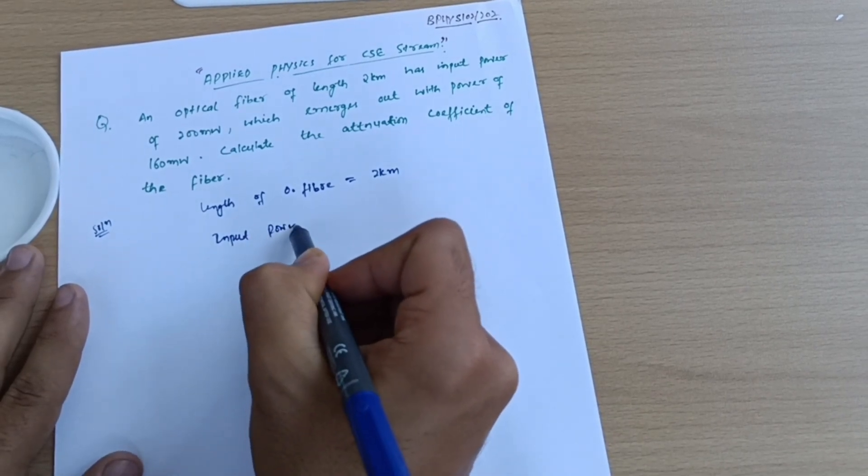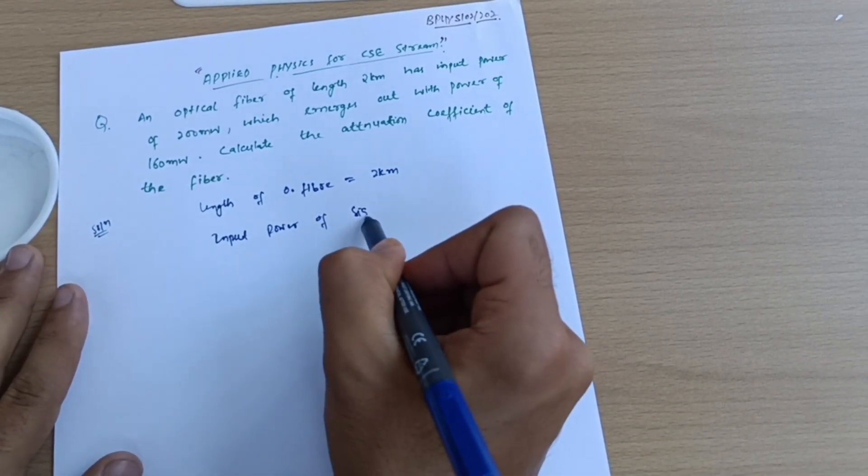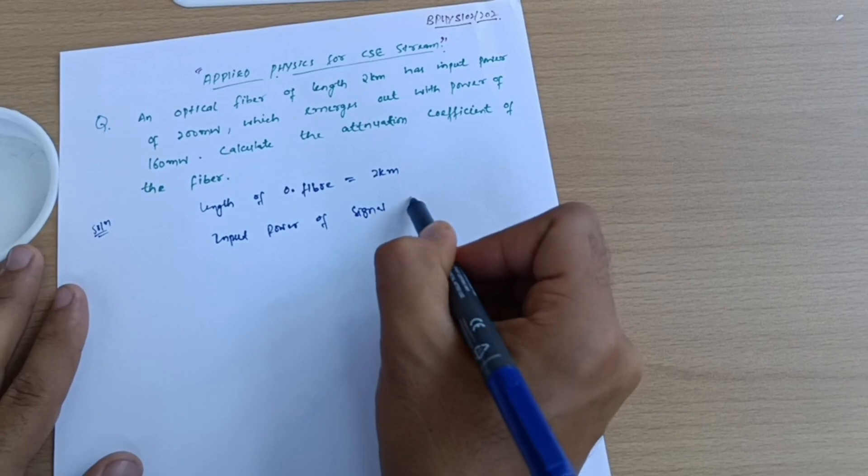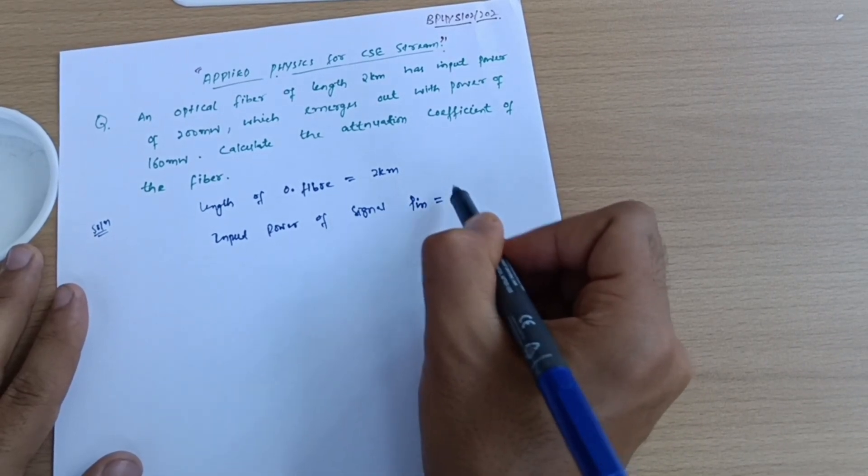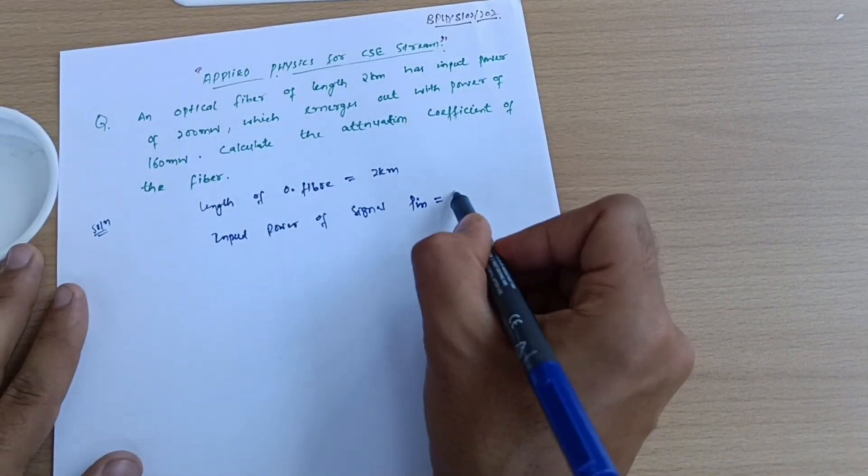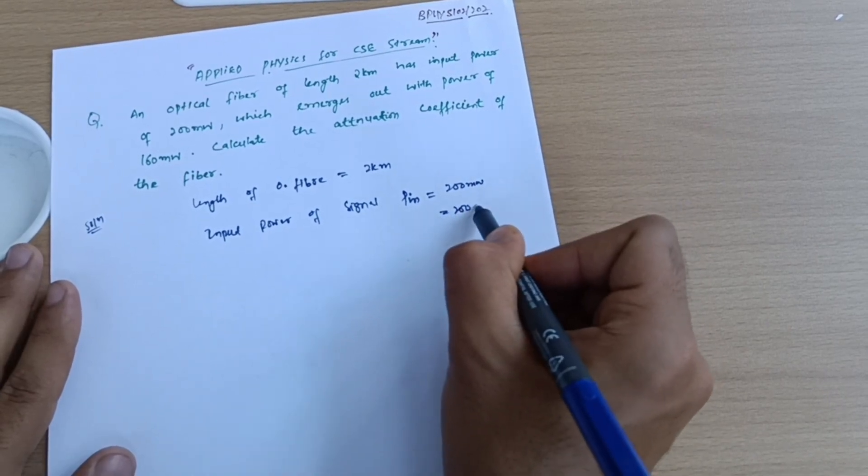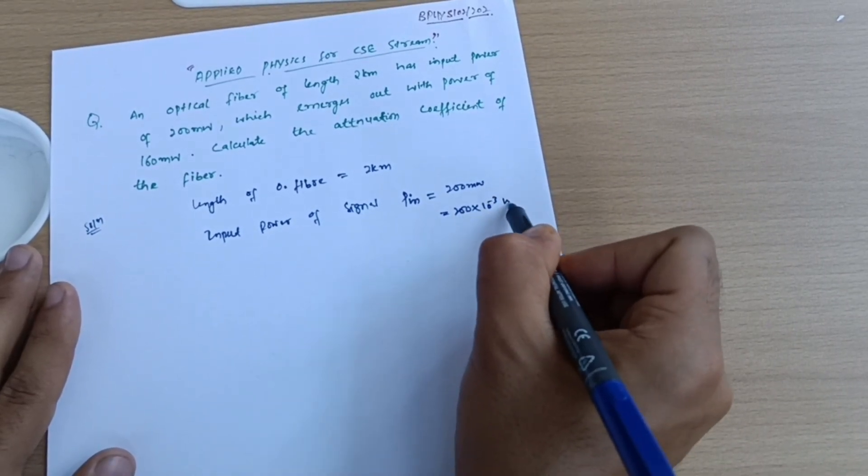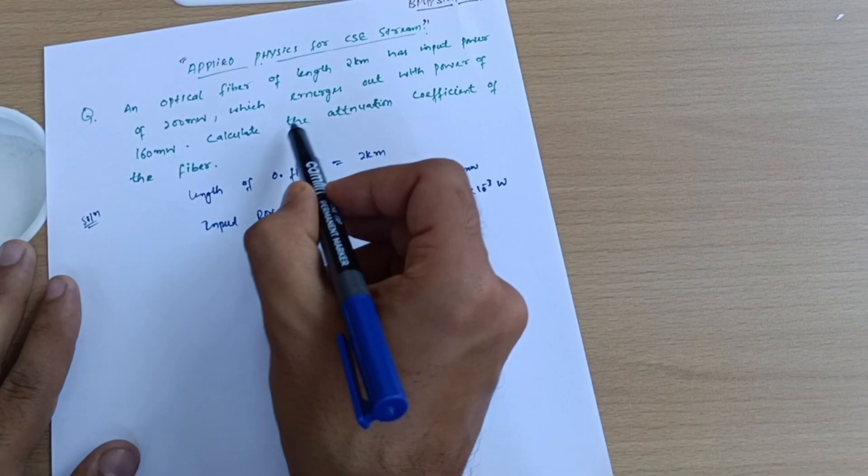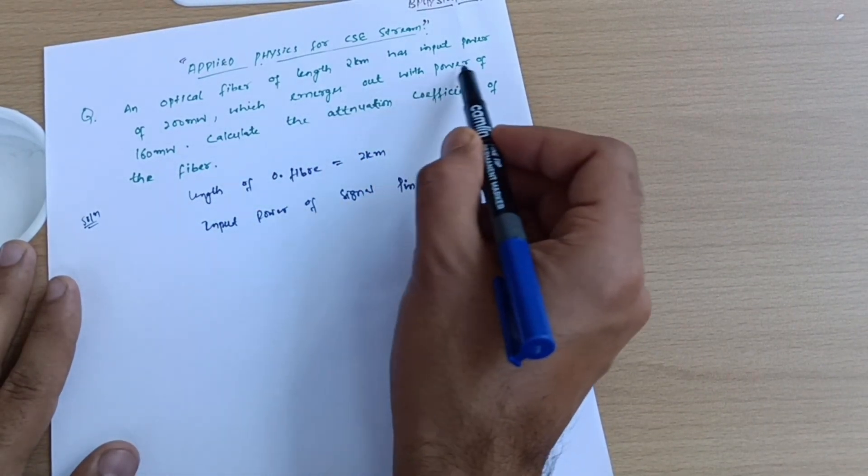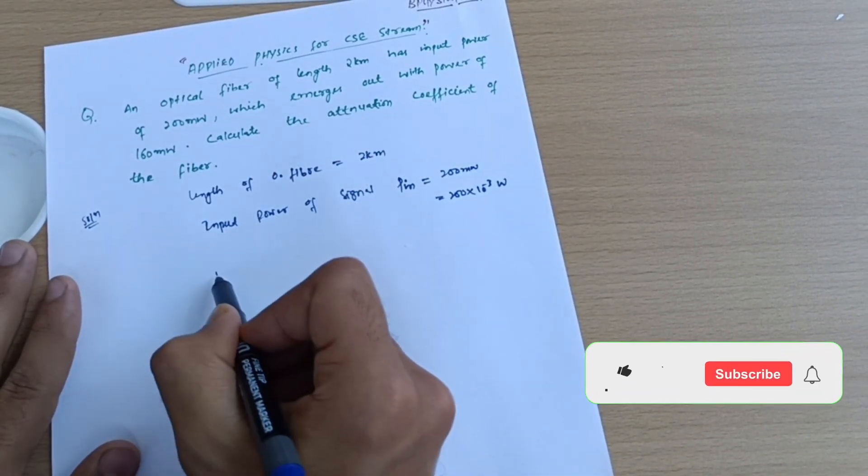Input power of signal, which is denoted by P_in, which is equal to 200 milliwatts. So you have to take in terms of watts, so I can write down 200 multiplied by 10 raised power minus 3 watts.